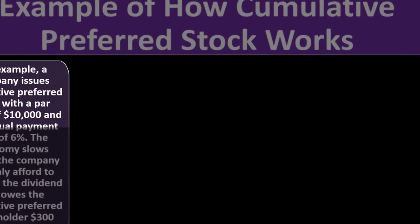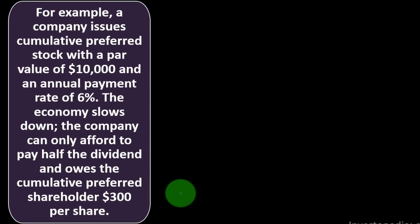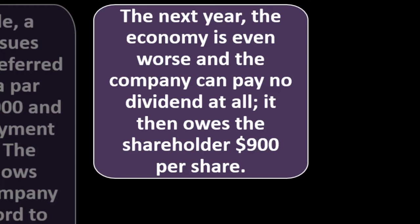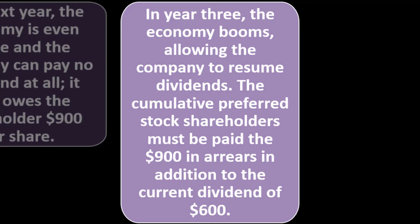For example: a company issues cumulative preferred stock with a par value of $10,000 and an annual payment rate of 6%. The economy slows down, and the company can only afford to pay half the dividend, owing the cumulative preferred shareholder $300 per share. The next year the economy is even worse and the company pays no dividends at all, then owing the shareholder $900 per share. In year three the economy booms and the company can resume dividends — but the cumulative preferred shareholders must first be paid the $900 in arrears in addition to the current dividend of $600.